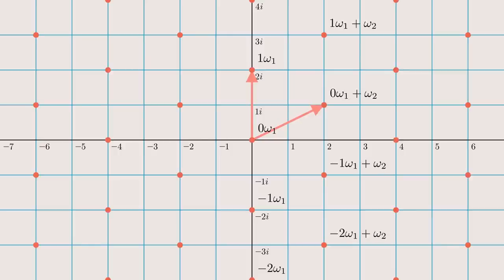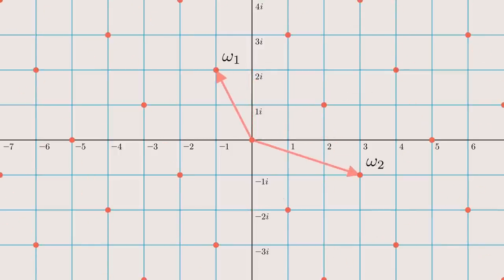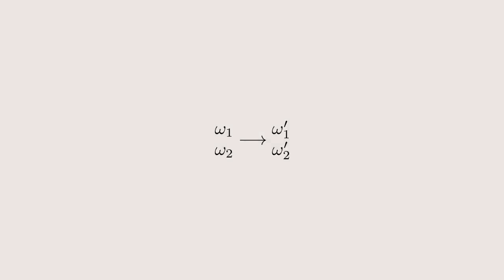Every such pair of complex numbers defines a lattice like that. But is every lattice uniquely defined by two complex numbers? Try it yourself. Find two different vectors that describe the same lattice as the one shown here. One example would be 1-2i and 2-i. The lattice spanned by these two is the exact same as the one from before.